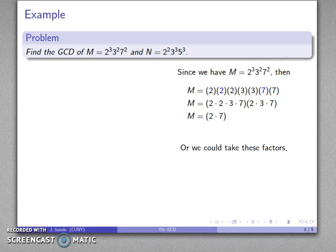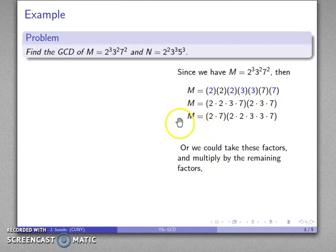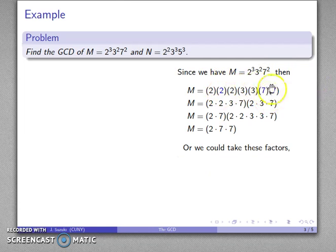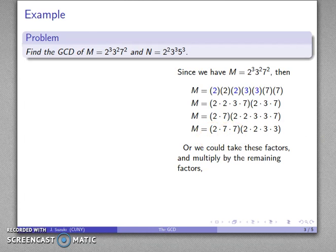I could take this set of factors — this 2 and this 7 — and then take the remaining factors: the 2, 2, 3, 3, and 7. Because I have all the factors I had originally, this is also going to be equal to m, and I can see that 2 times 7 is a divisor of m. Similarly, I can take the factors 7 and 7 as one set, take the remaining factors, and again that gives me m as a product, so 2 times 7 times 7 is also a divisor.